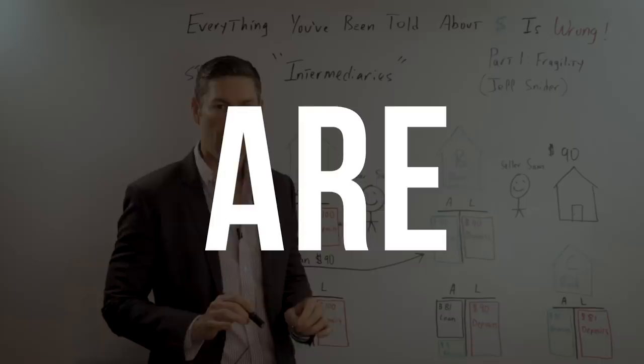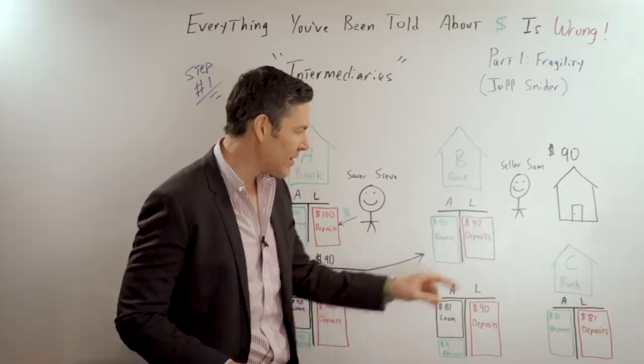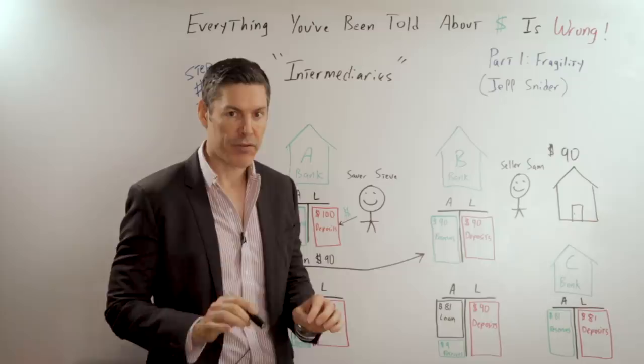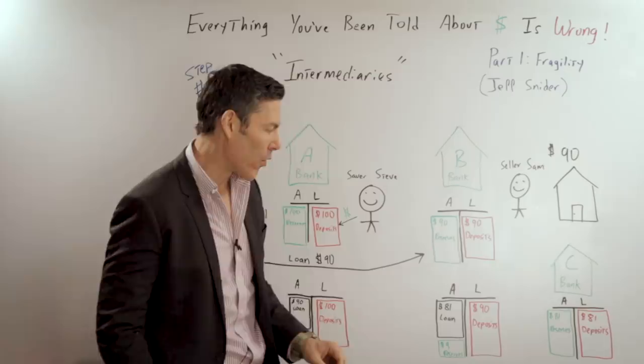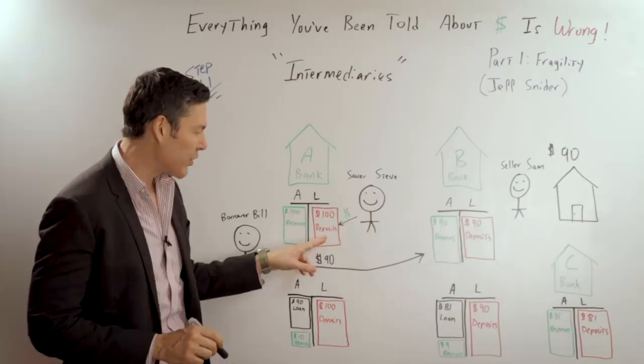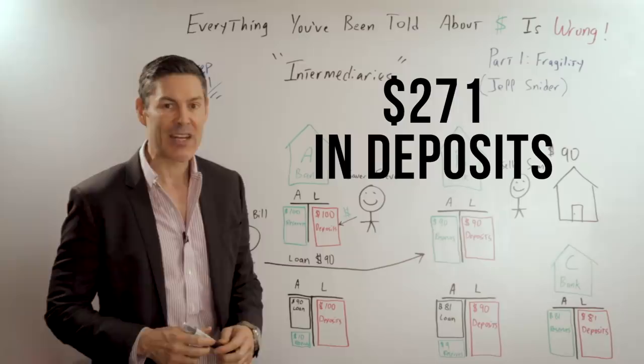Let's take it one step further. Bank B has the $90 in deposits so they need to keep $9 in reserves for that 10% reserve requirement. They lend out $81. Let's say that goes over to Bank C. That becomes a liability and an asset for them. Because of the fractional reserve banking, we started with $100 in deposits, but now we have $271 in deposits. And that would multiply all the way up to $1,000.